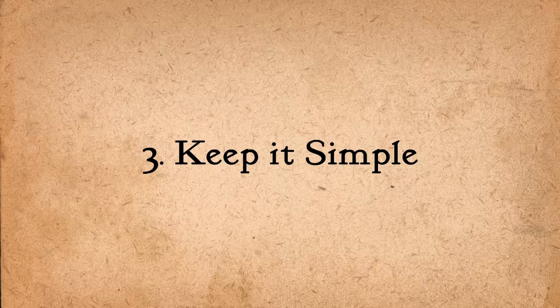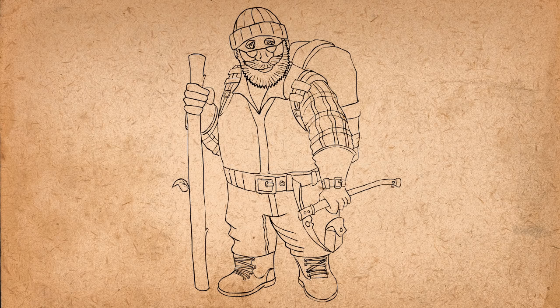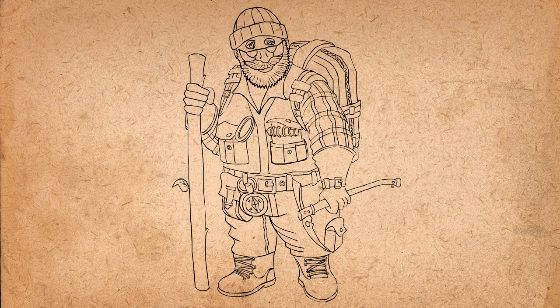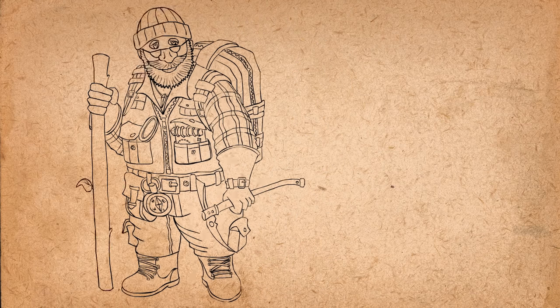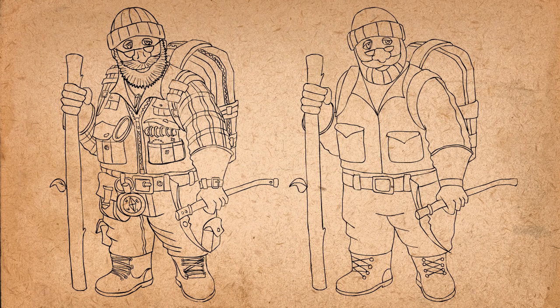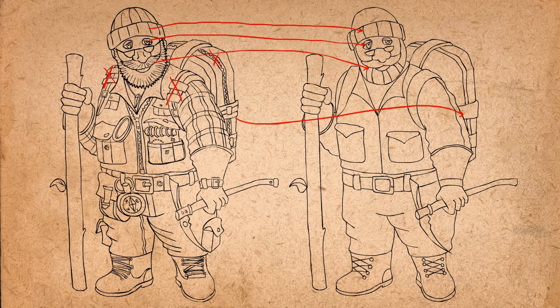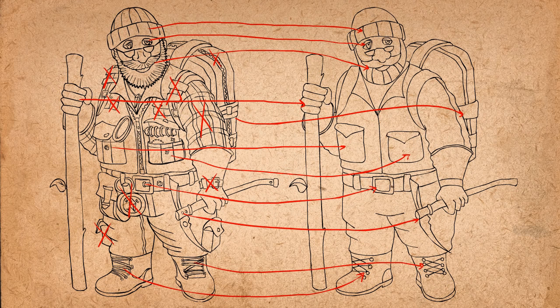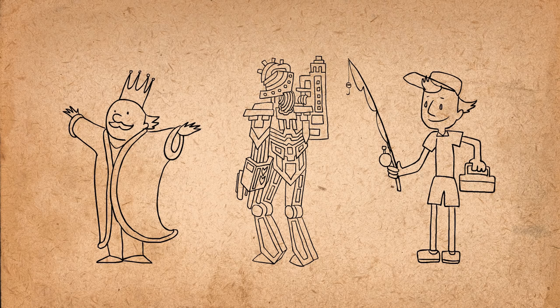Third, keep it simple. Too much information can over-complicate the character and also make it harder and more restraining to animate. This is the difference between drawing for illustration and drawing for animation. With animated characters, you have to pick and choose what details to keep, because you're going to be drawing those details hundreds of times.